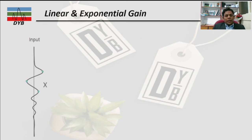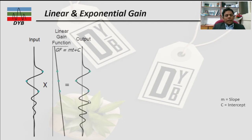Here is an example. The input data shows one trace where amplitude is high on the shallow part, but once you go deeper, there is no amplitude. The second example applies the linear gain function: GF = MT + C, where M is your slope and C is your intercept. After applying the linear gain, the output trace shows the amplitude at the top is enhanced, but going deeper it is still not as strong as the top.